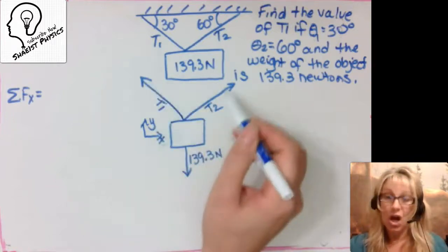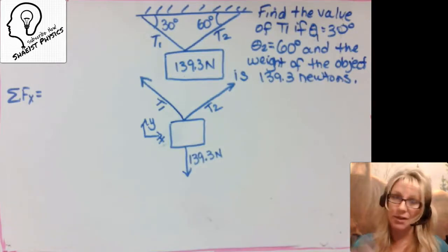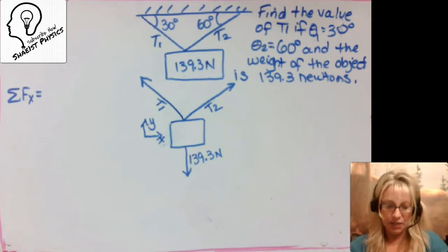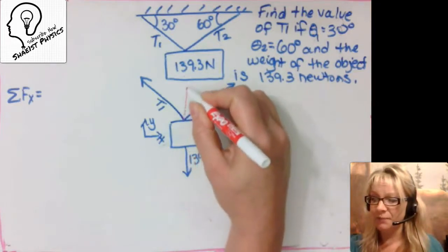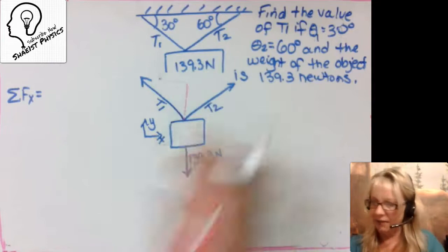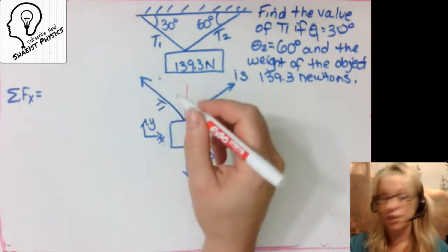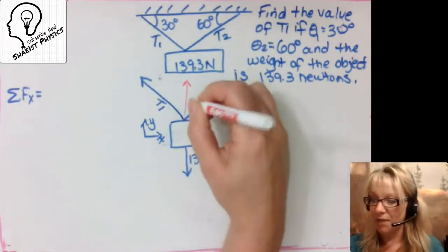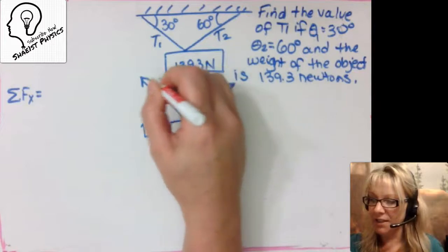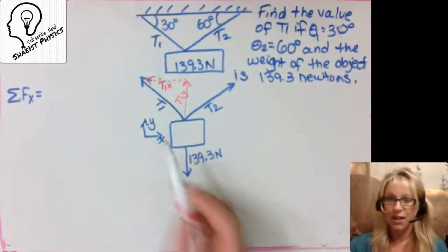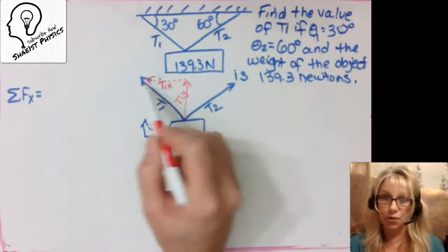These forces here are angled — they're not in the x, they're not in the y. I call those rebel forces, and we need to break those bad boys down. So instead of using T1 here, I'm going to use the equivalent, which would be a combination of tension 1 in the y direction plus a combination of tension 1 in the x direction.